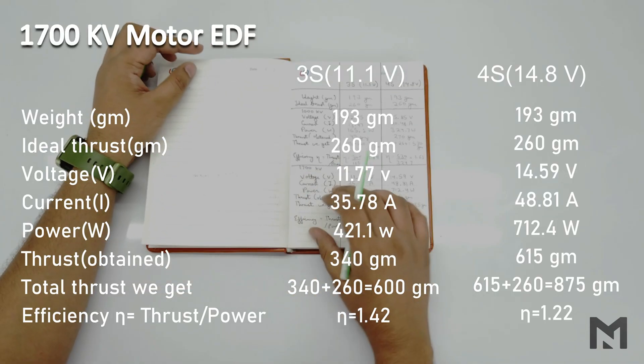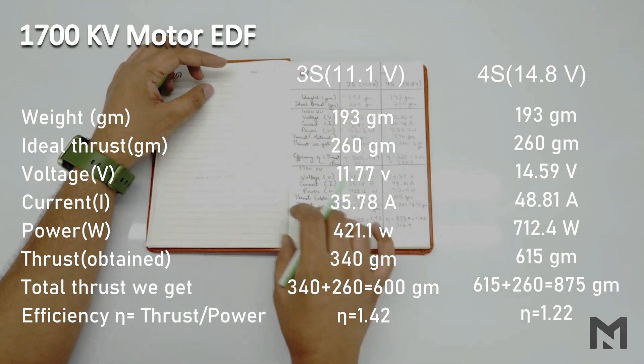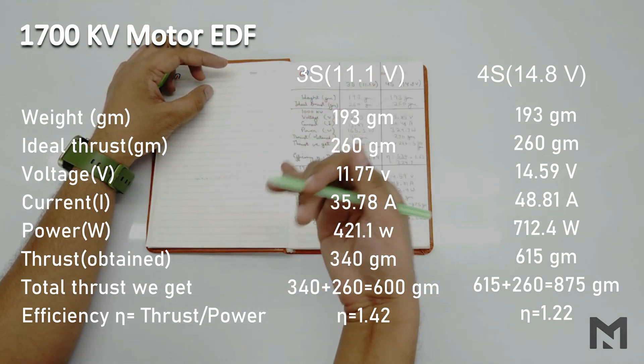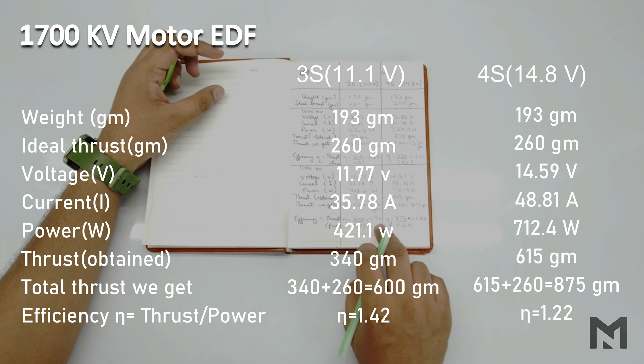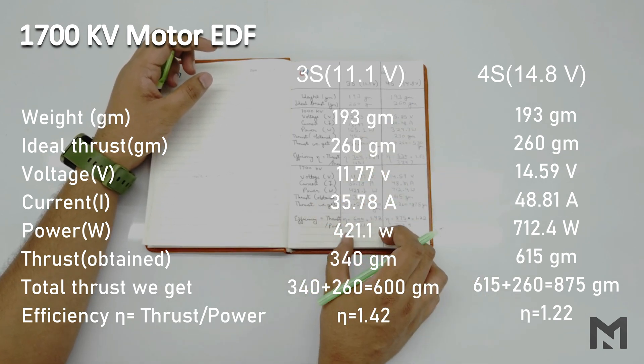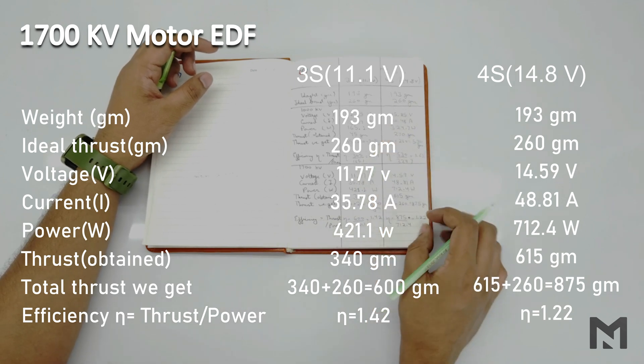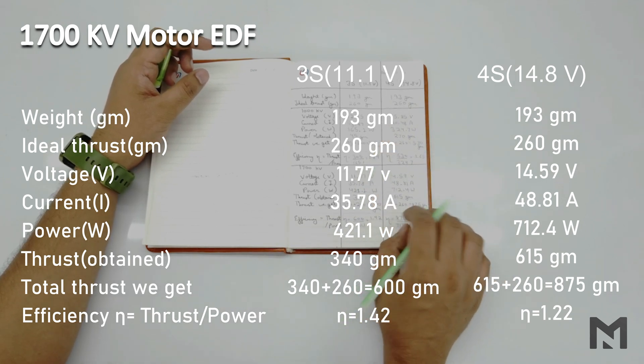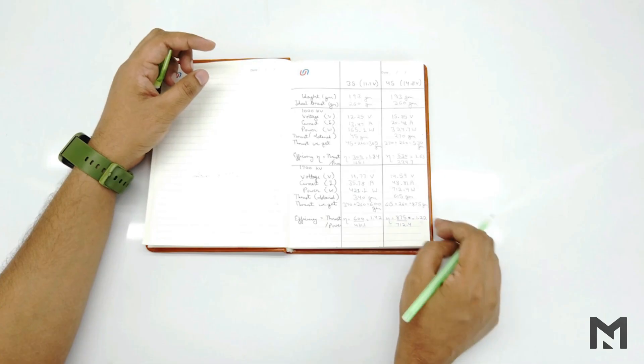The 1700 KV EDF performed well as 1700 KV motor has high RPM as compared to 1000 KV motor. It produced a thrust of 600 grams at 1.42 efficiency at 3S battery. And a thrust of 875 grams at 1.22 efficiency at 4S battery. But it has a high mass flow rate.